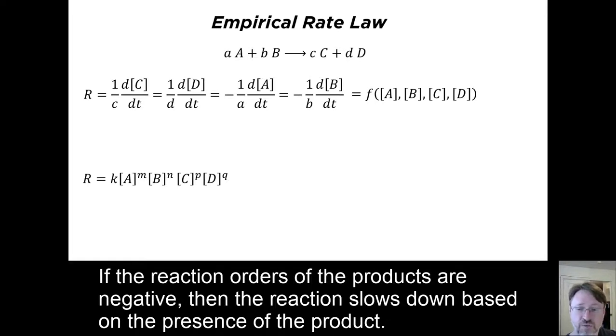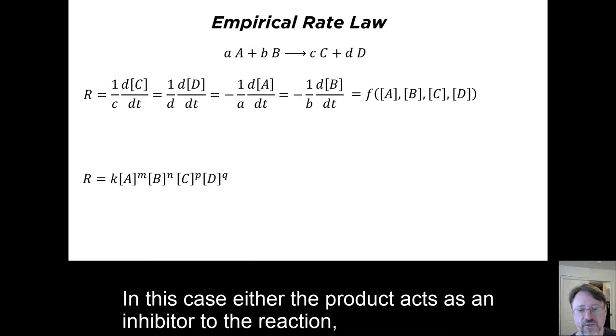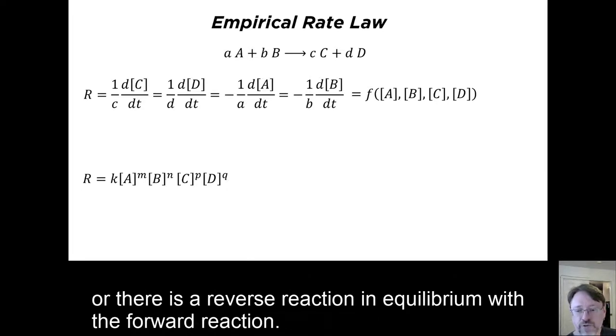If the reaction orders of the products are negative, then the reaction slows down based on the presence of the product. In this case, either the product acts as an inhibitor to the reaction, or there is a reverse reaction in equilibrium with the forward reaction.